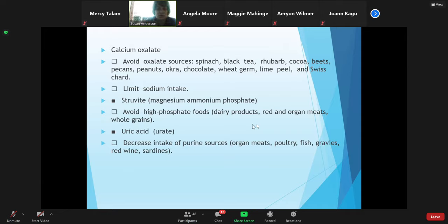This is listed here - organ meats, poultry, fish, gravy, sardines, red wine. We just talked about that with that previous chart that we were looking at.